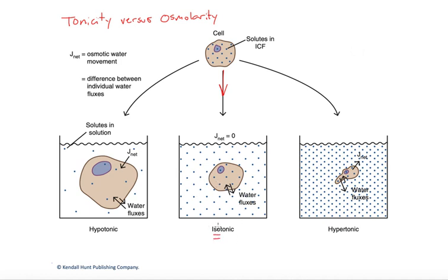Iso refers to same tonicity. If it's the same concentration of solutes that can't move, then we have similar chemical activities of the water on the inside and outside — the same concentration of water. The water fluxes in and out of the cell across aquaporins would be equal; in other words, net osmotic water flux is zero.